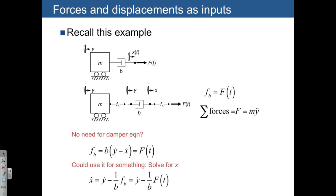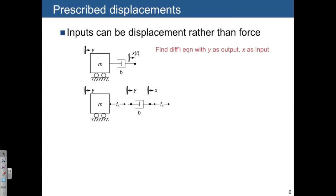Now let's take this idea and think about displacements as inputs. Using the same system, the question becomes: find a differential equation with y as the output and x as the input. We're treating the displacement of the end of the damper as an input, while still interested in y as the output. From the same expanded free body diagram, we already know m*ÿ = -Fb, and the damper equation gives Fb = b*(ẏ - ẋ).